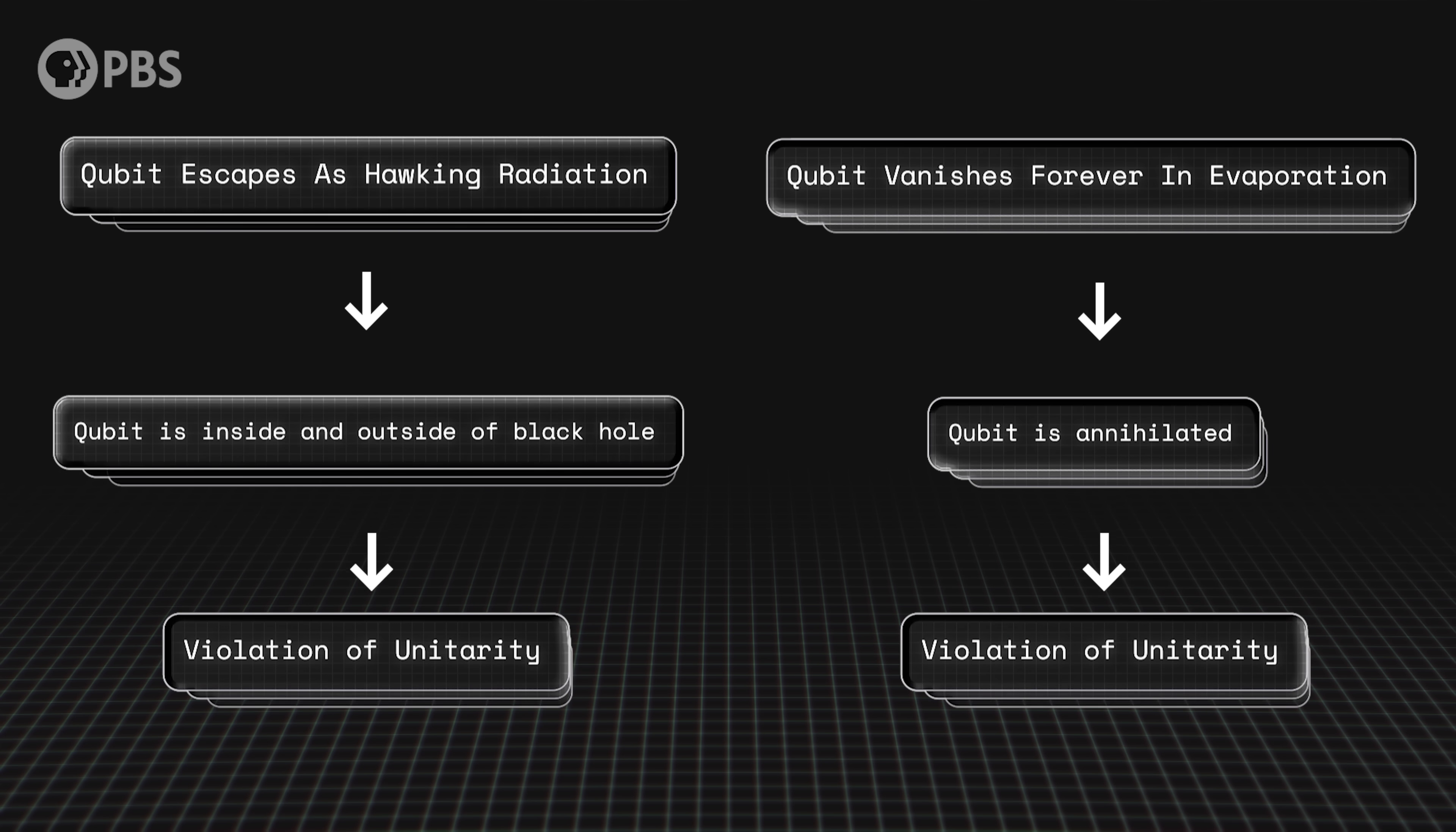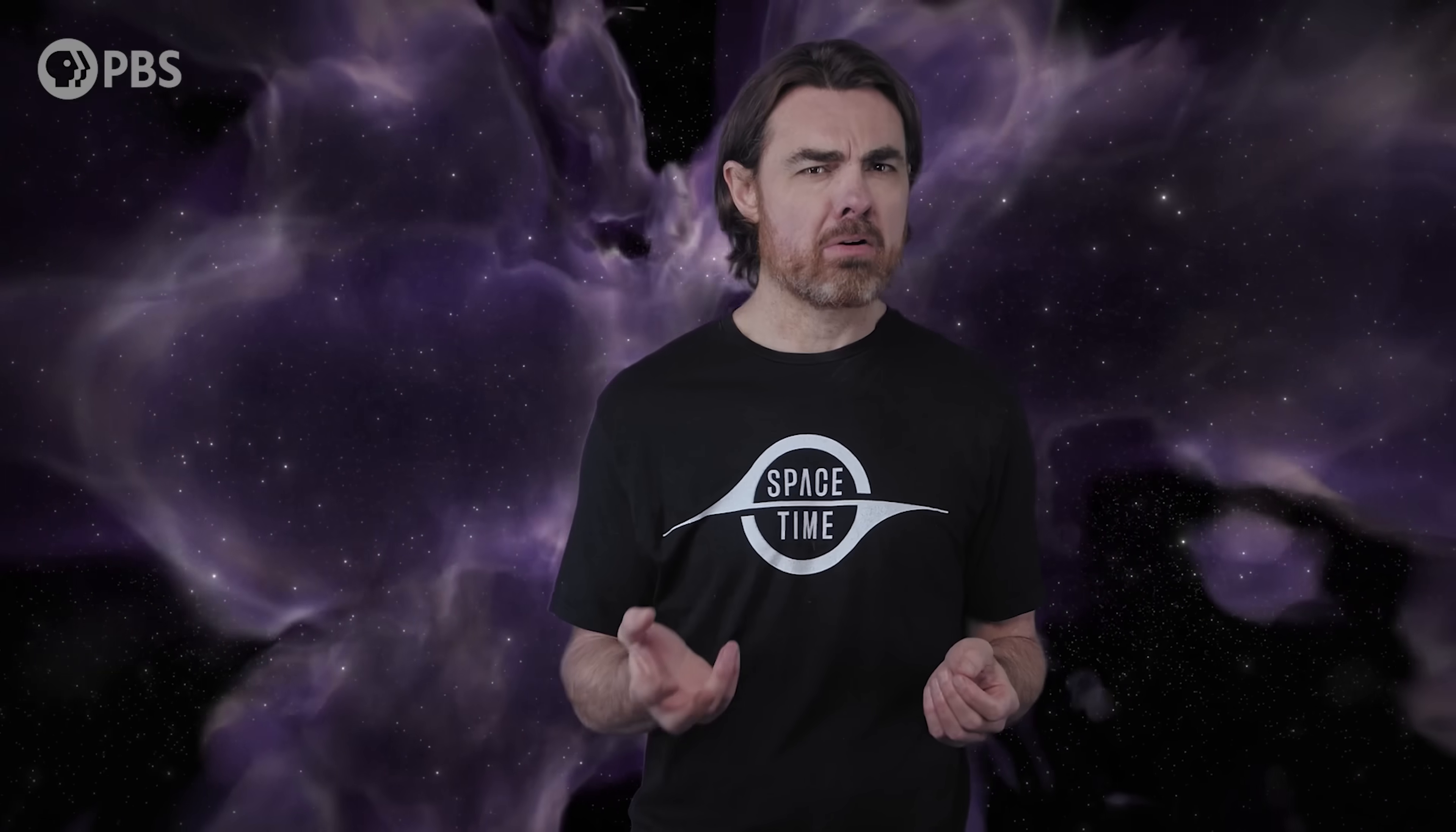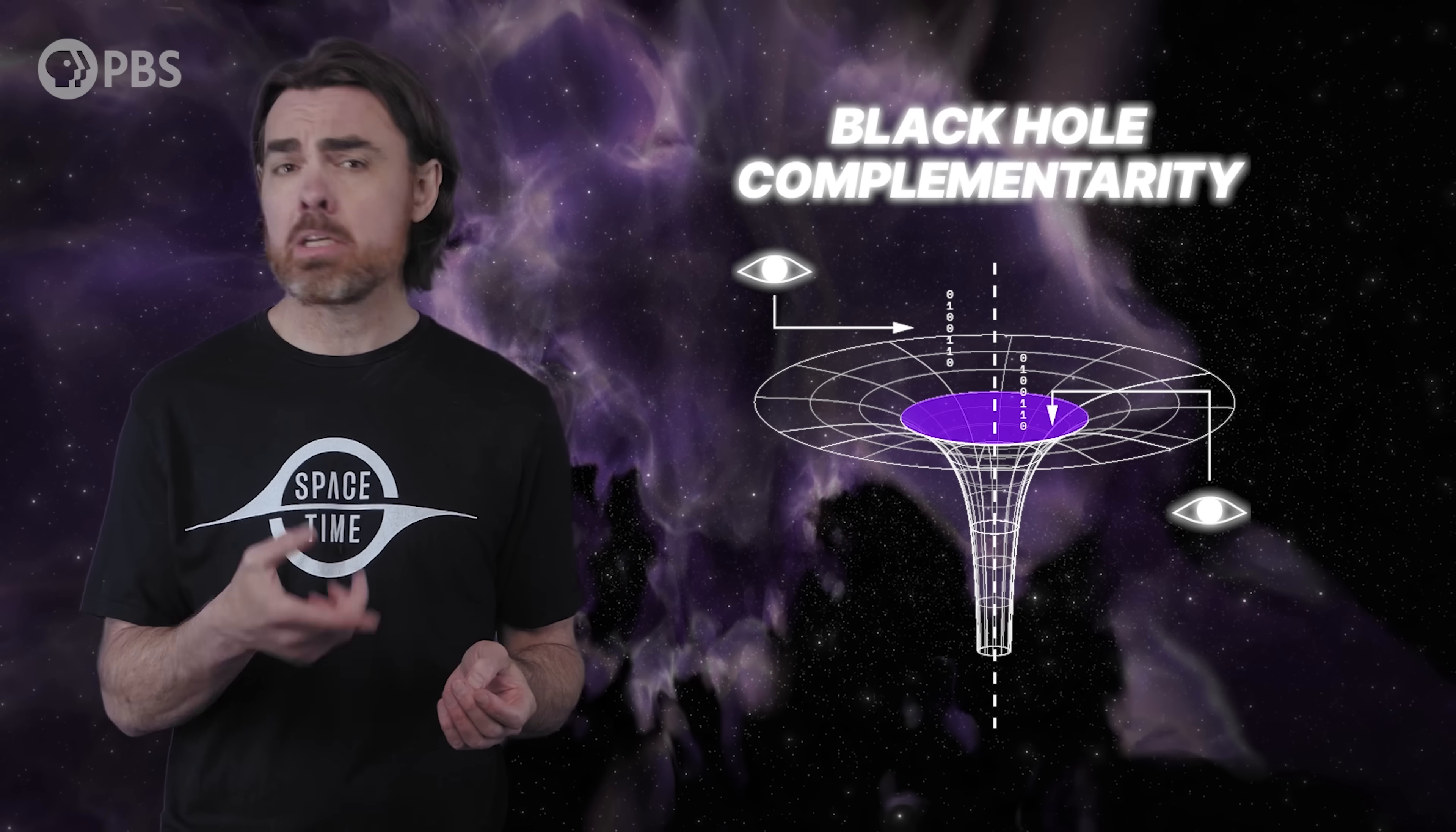Either way, a foundational principle of quantum mechanics, conservation of quantum information, or unitarity, appears to be violated. Because both the equivalence principle and unitarity are fundamental to their respective theories, we know something must be wrong with our understanding of what happens to quantum information in a black hole. There have been various proposed solutions, but today I'm going to focus on one of the earliest, and perhaps least intuitive.